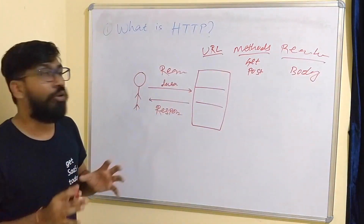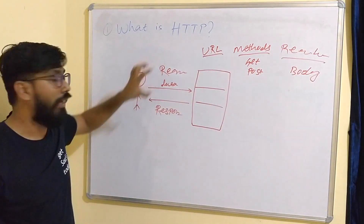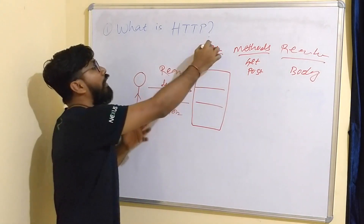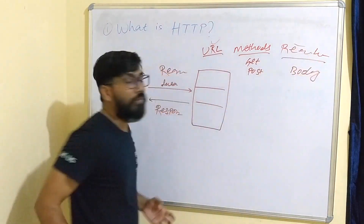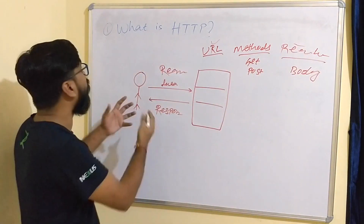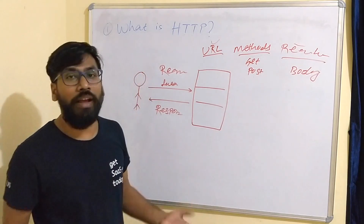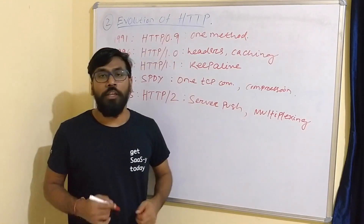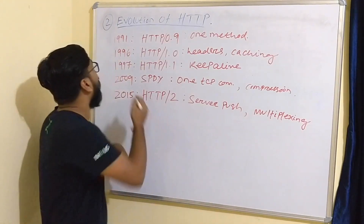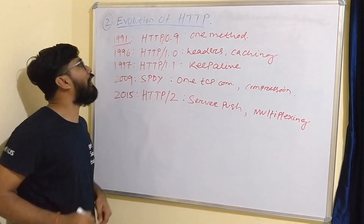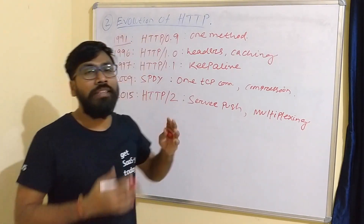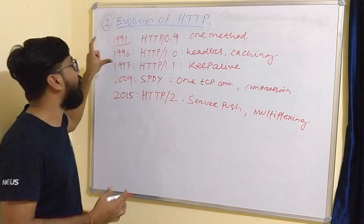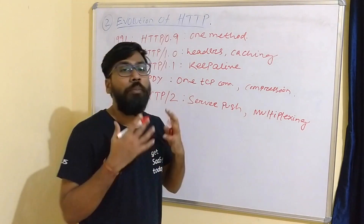The request also has a request header and request body — these four parameters are important for making one request. Similarly, the response also has methods, URL, header, and body. That is how we can define HTTP. Now let's discuss the evolution of HTTP. In 1991, HTTP 0.1 was introduced, which was only able to call one method, and it spent five years experimenting with better ways to request and get responses.